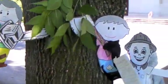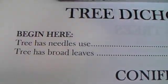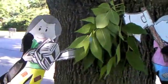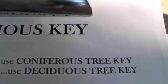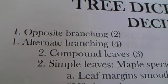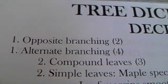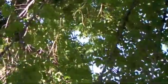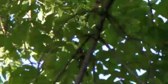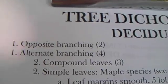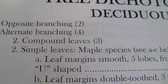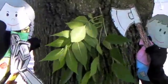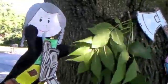Okay, let's take a look. Does this tree have needles or broad leaves? I think it has broad leaves. I agree. Let's take a look at the deciduous key. Okay, step number one: does it have opposite branching or alternate branching? Looks like opposite to me. I agree. Let's go to step number two. Does it have compound leaves or simple leaves? Those leaves don't look simple to me — I think they're compound. I agree.